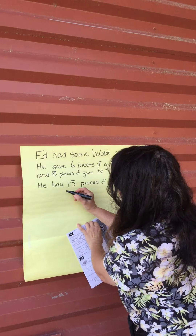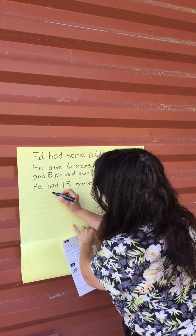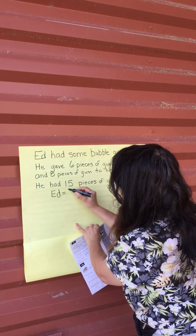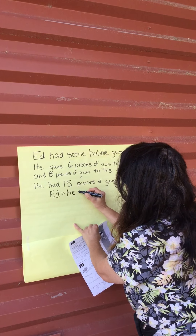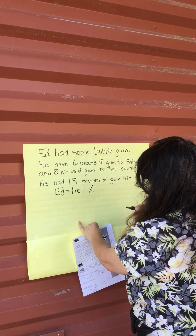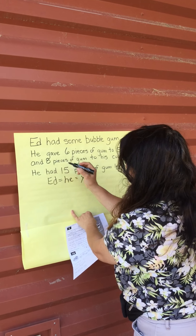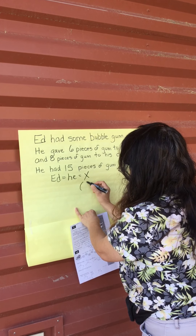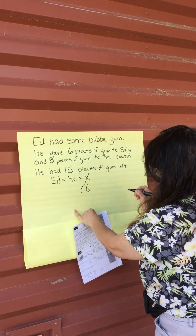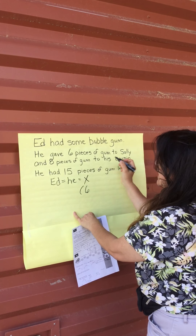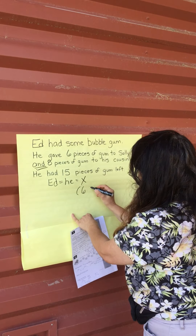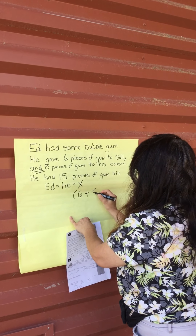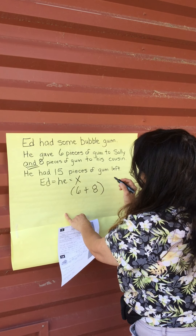We're going to introduce you to X's. We're going to say Ed equals he equals X. He gave six pieces of gum to Sally, and — which is plus eight — and we're going to put those in parentheses.